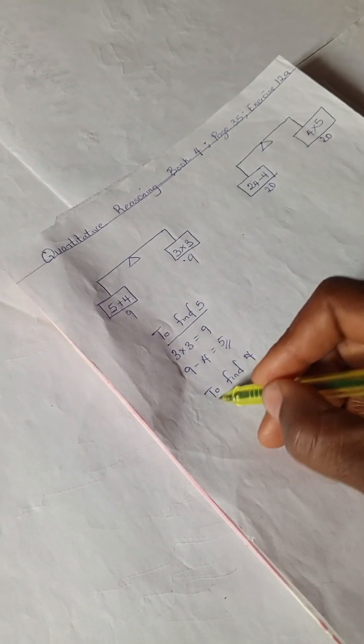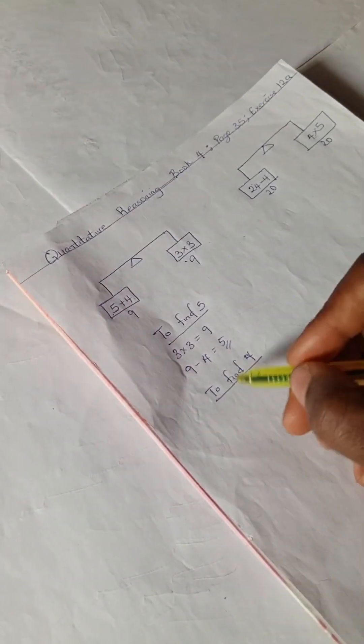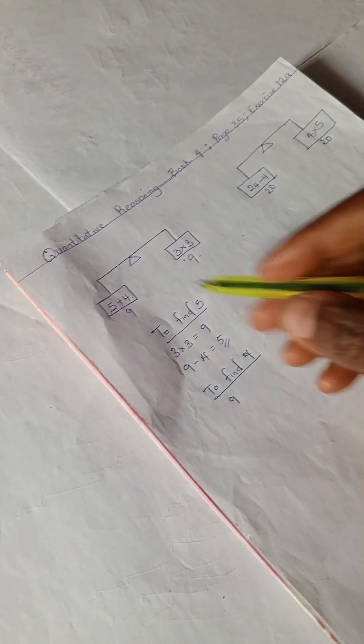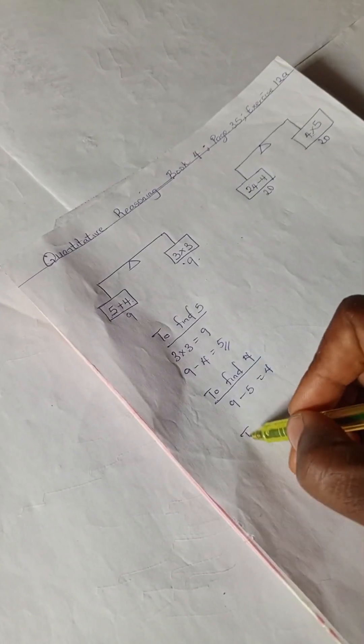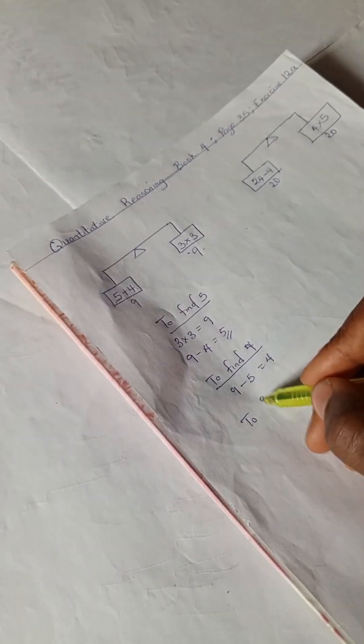So we have 9 already here and 9 minus 5 is 4. Then next, let's find one of the 3s.